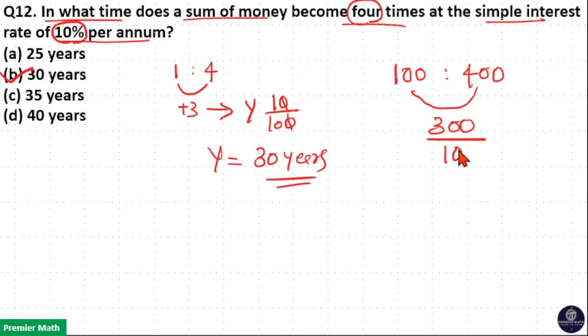So, per year, 10% per annum, I received this 300 rupees. That means, 30 years is the time duration here. So, option B is your answer.